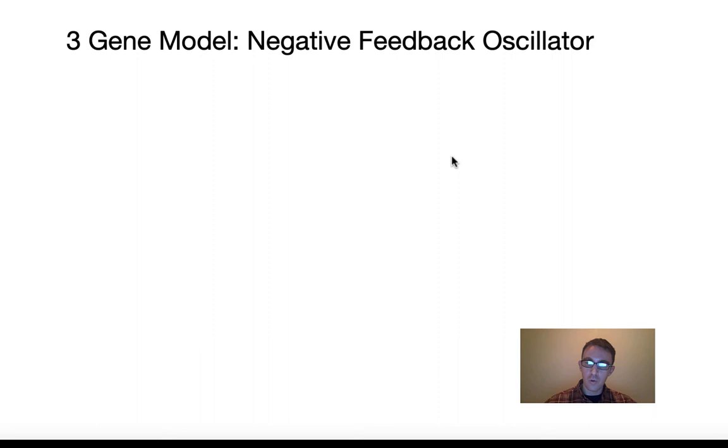Today, I'm going to be showing you guys a model with three genes, our first little bit of a complex network. This is going to be what's called a negative feedback oscillator. So let's get started.